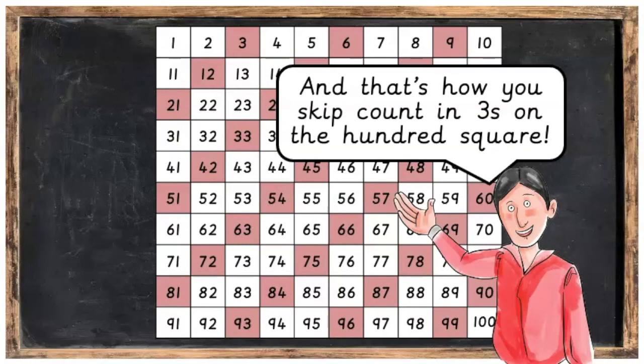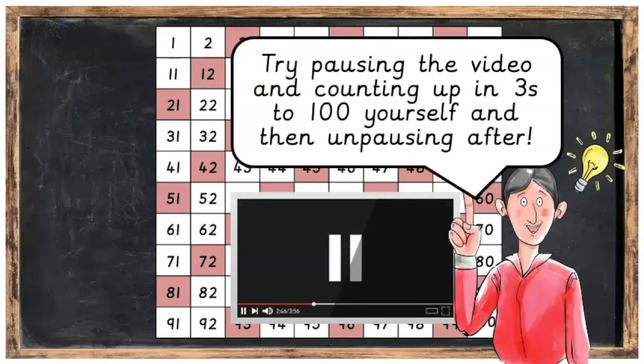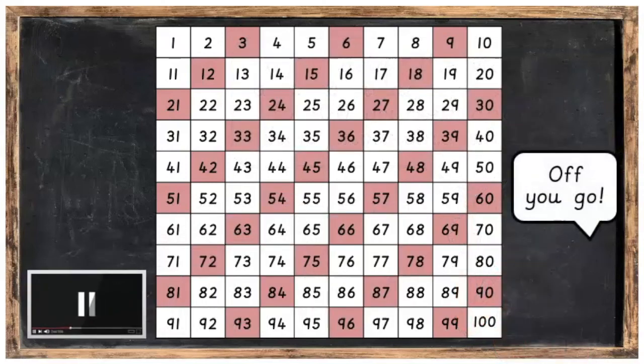And that's how you skip count in threes on the hundred square. Try pausing the video and counting up in threes to 100 yourself, and then unpausing afterwards. Off you go!